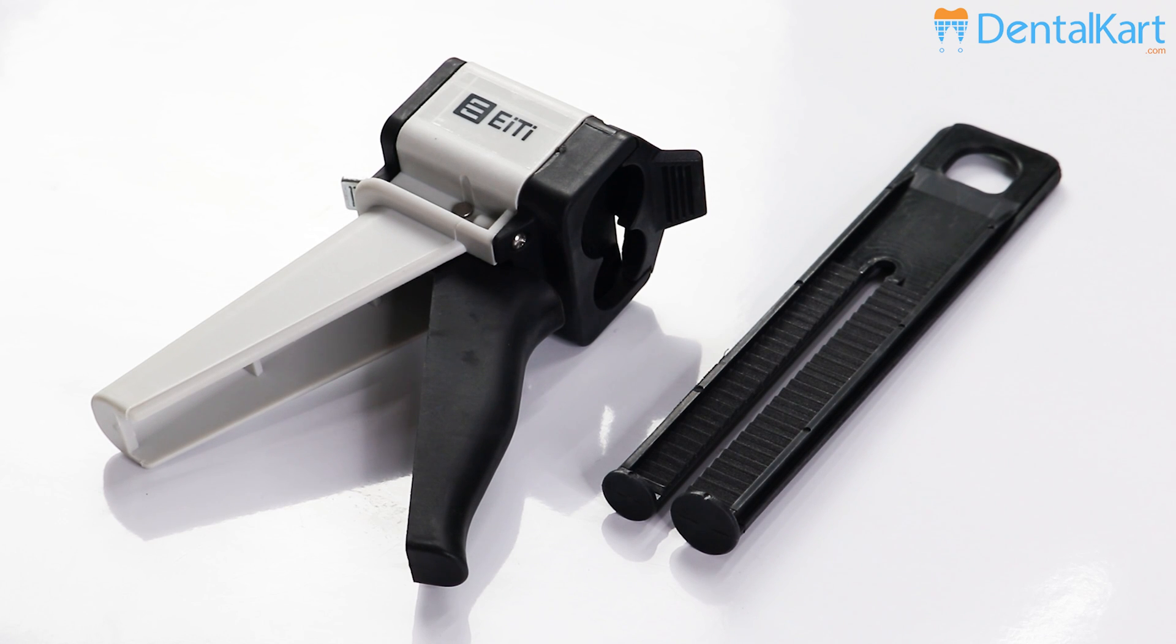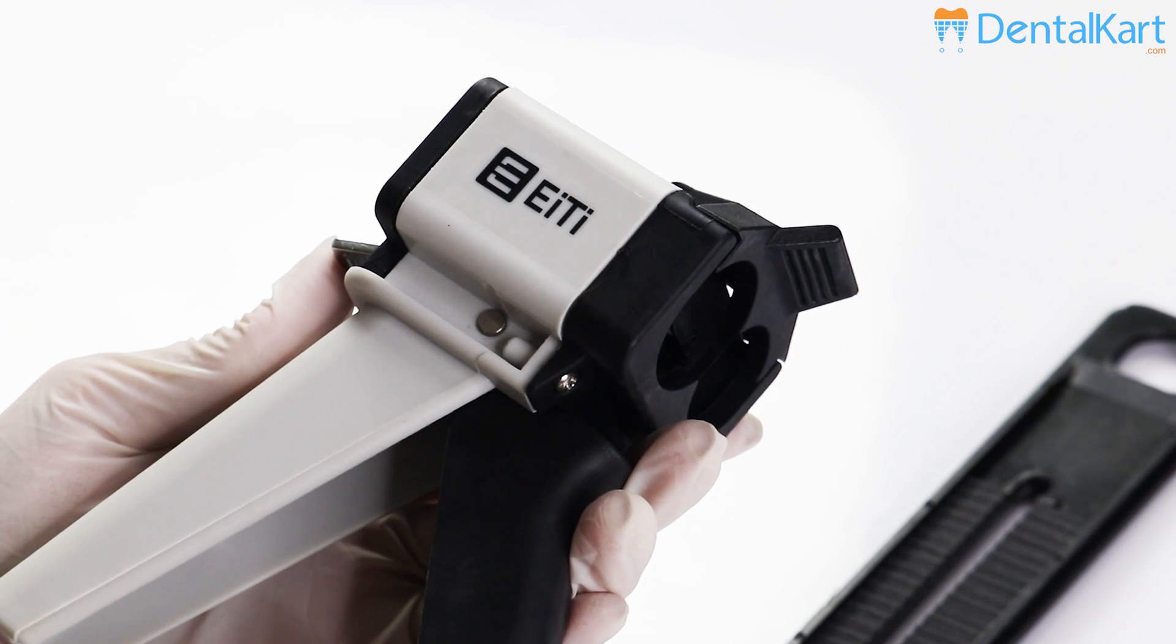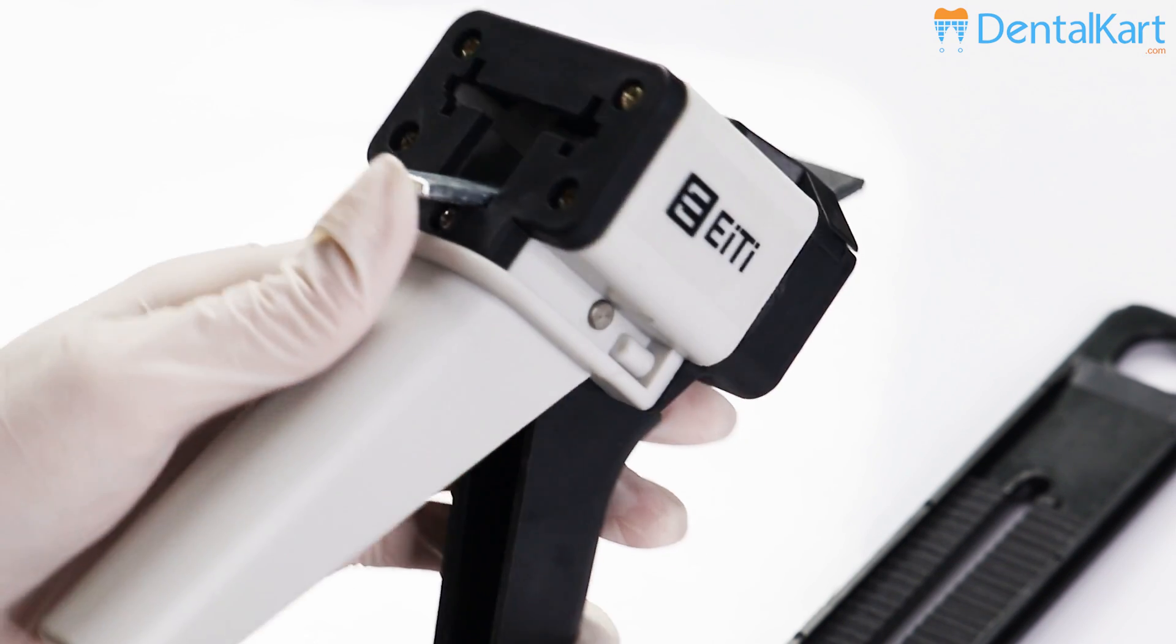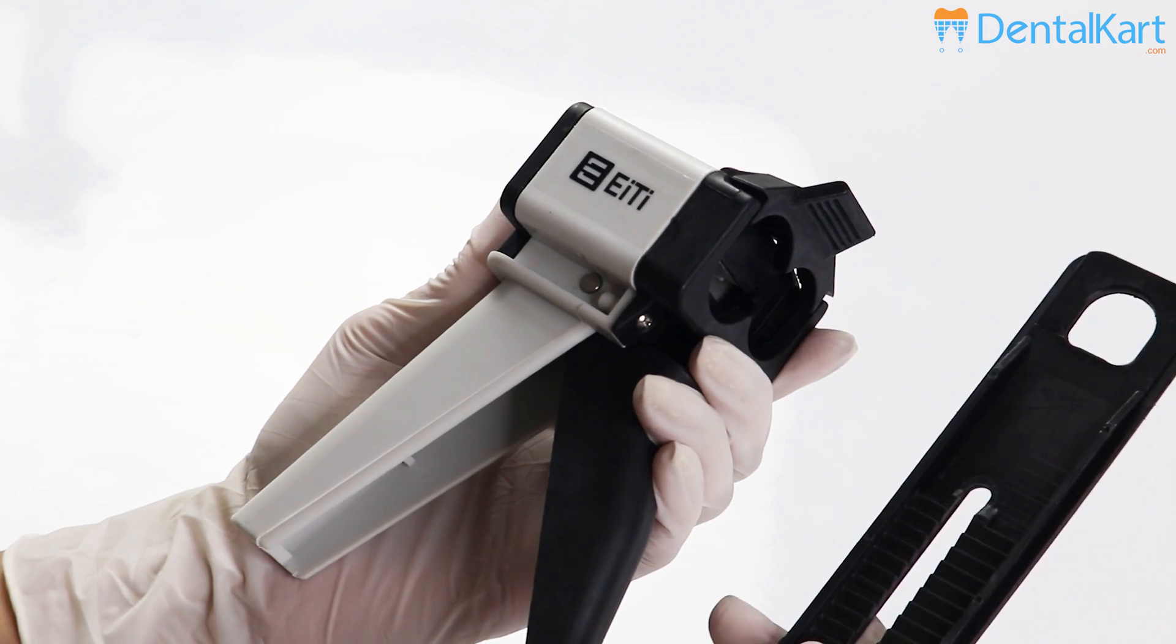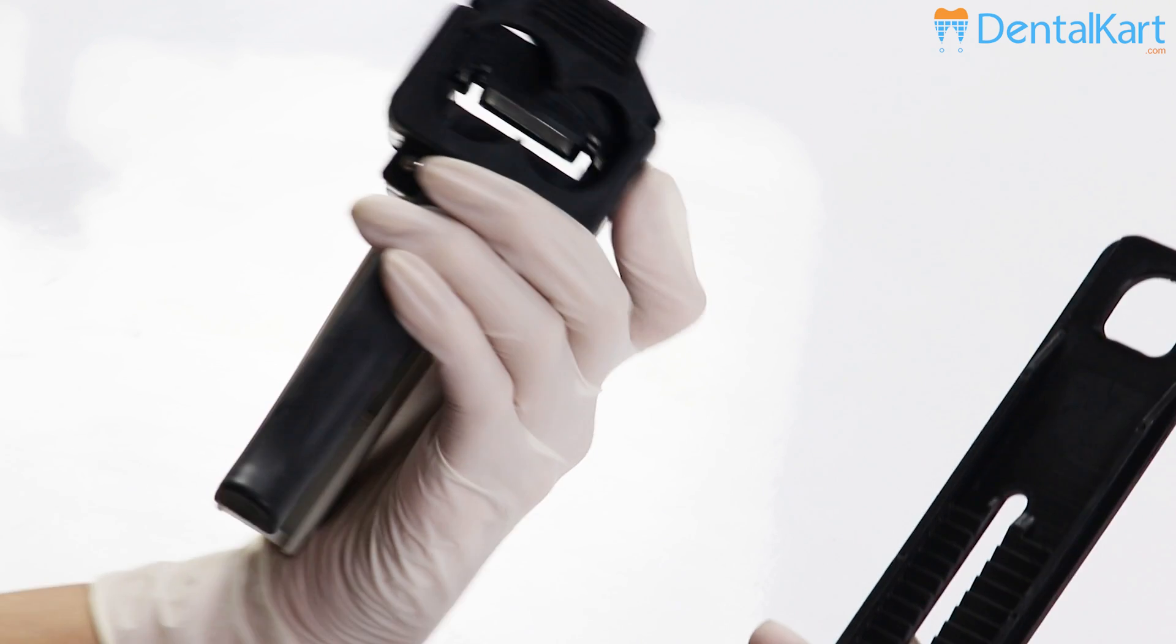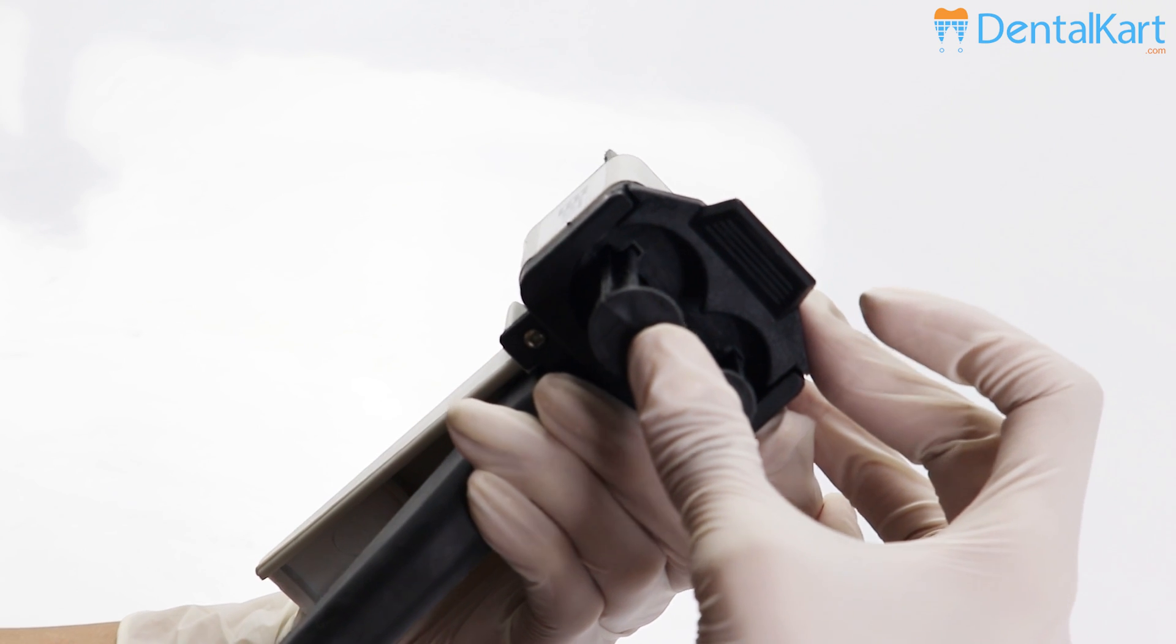The ET dispensing gun comes with a dispenser and a piston plunger. To assemble the ET dispensing gun, first lift the release lever of the dispenser and then pull the piston plunger all the way back into the dispenser.